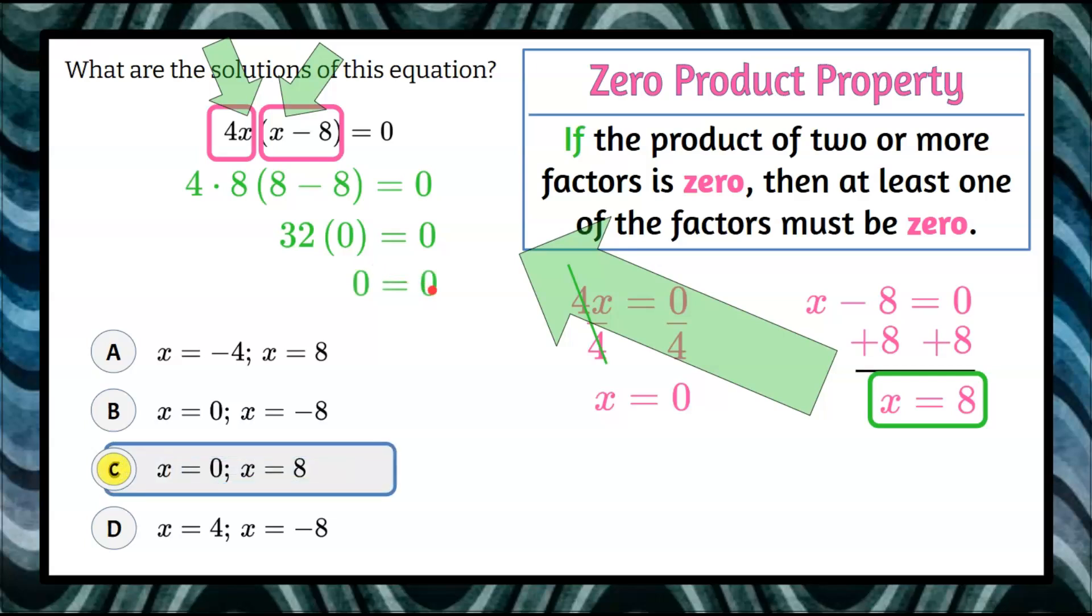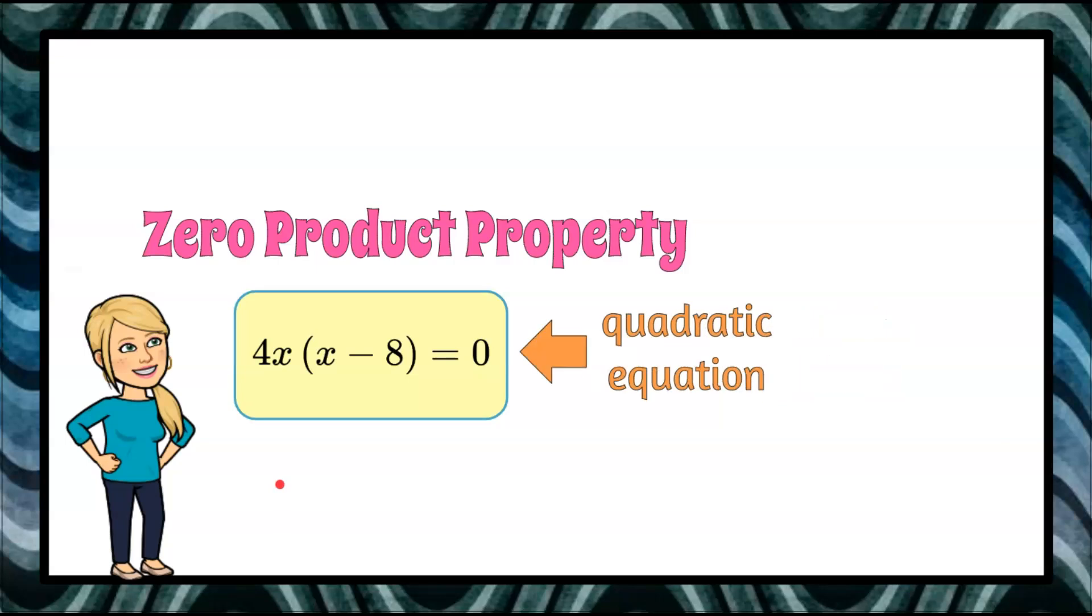Now I know that answer choice C, x equals 0 and x equals 8, are the solutions for this quadratic equation. And that is how you use the zero product property to solve a quadratic equation in factored form.